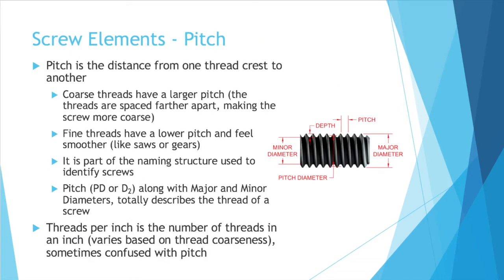And what is pitch? Pitch is the distance from one thread crest to another. Coarse threads have a larger pitch — the threads are spaced farther apart, making the screw more coarse. Think about any time you've touched something that's pretty rough; it's usually because it has well-defined, large, and spread-out features. Fine threads have a lower pitch — the distance between the threads is smaller and thus feels smoother. It's important to note that coarse threads don't necessarily mean low quality and fine threads don't necessarily mean high quality. There are applications where you'd want more coarse threads and applications where you'd want more fine threads.